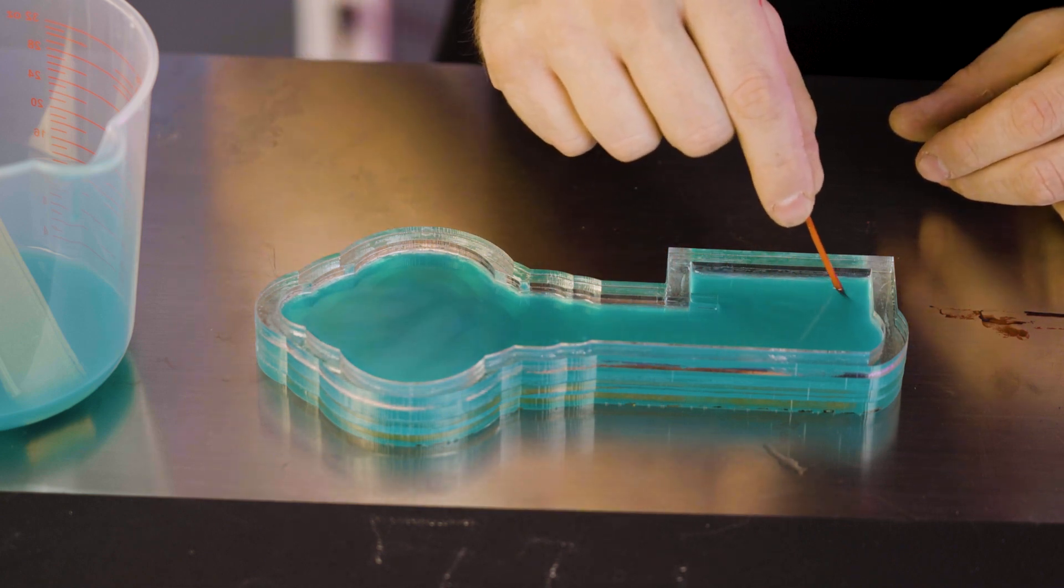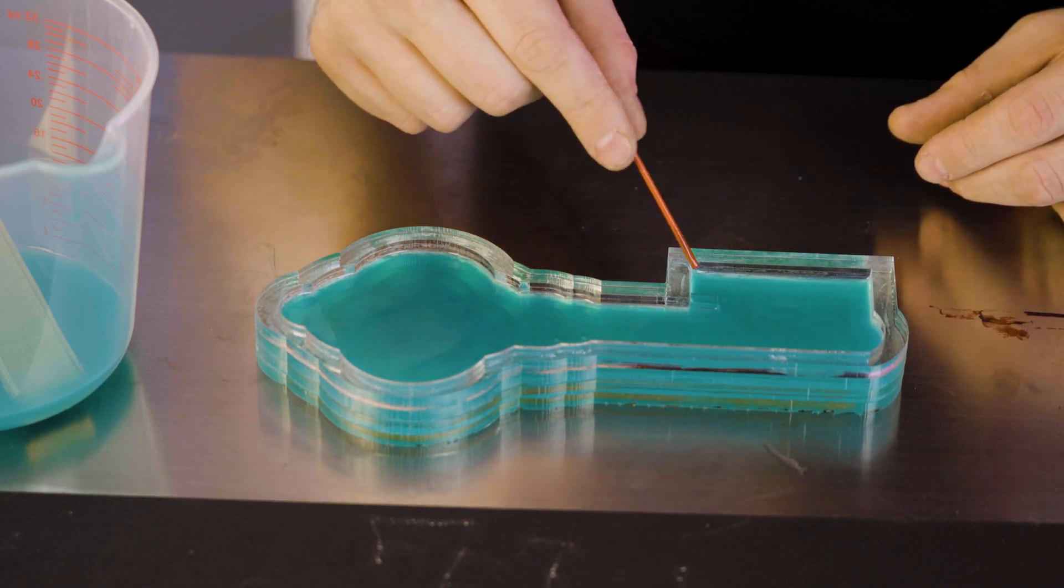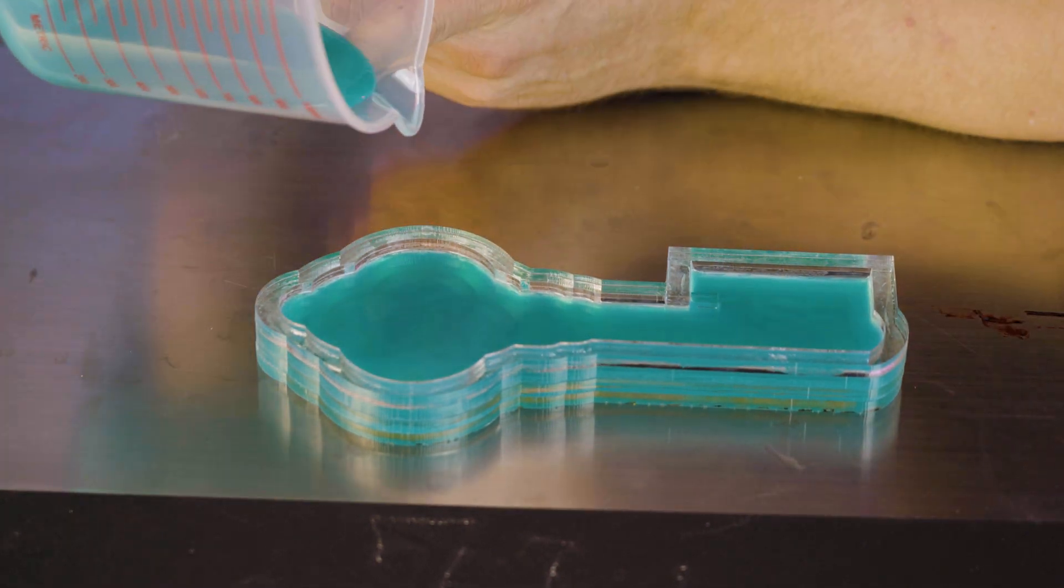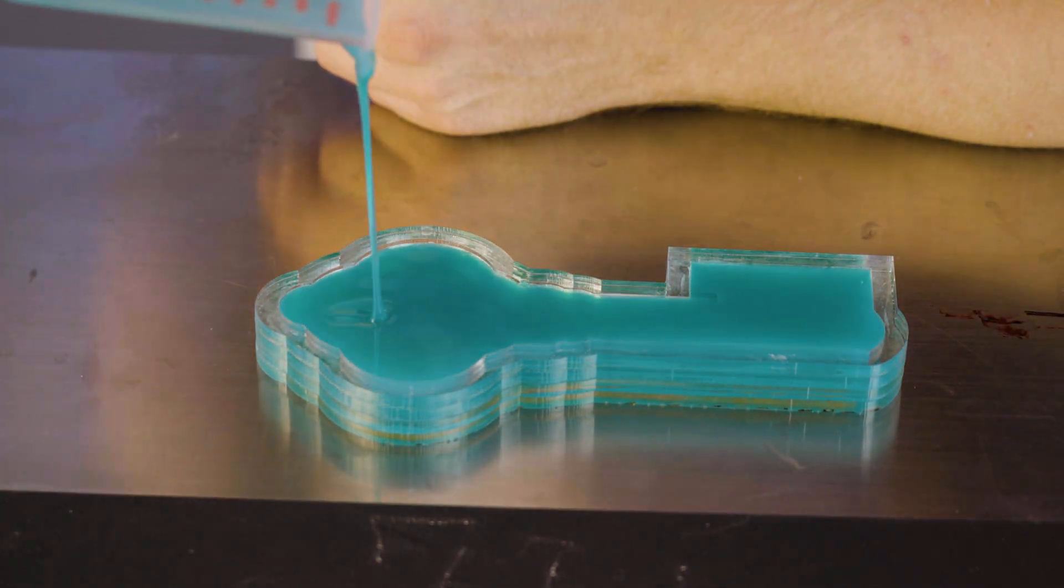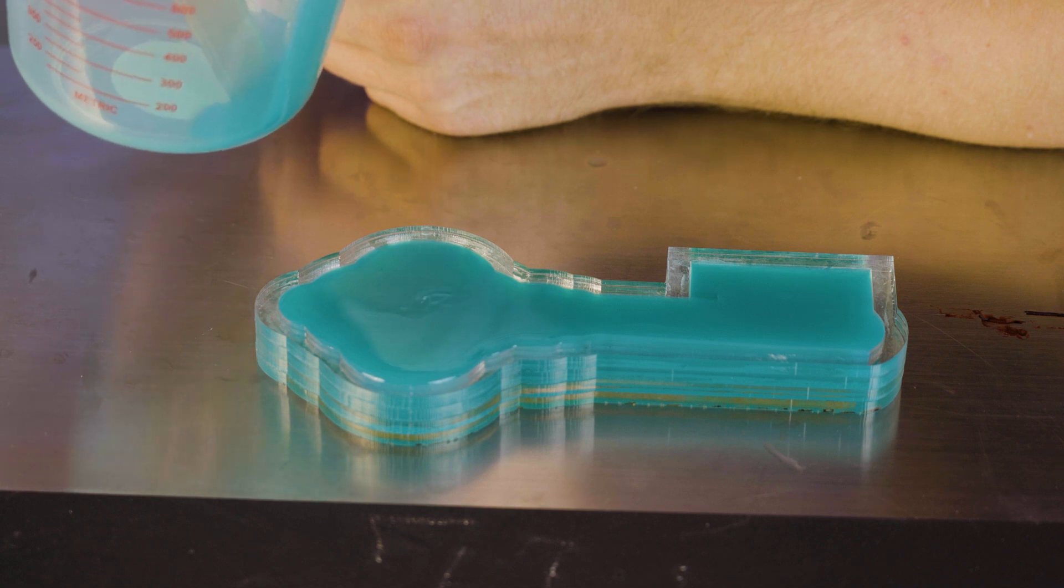Clean off our poker stick and then continue to pour the rest until we get to the top of our mold. About to seep out, but that is okay.